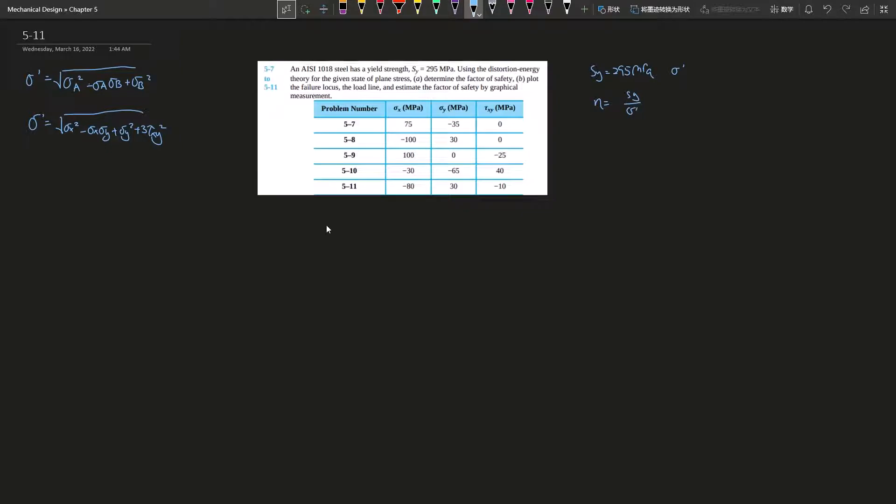Now, a lot of people get confused with these two equations. With the top von Mises, the stress σ_a and σ_b are principal stresses, so you have to find principal stress first before you plug them in.